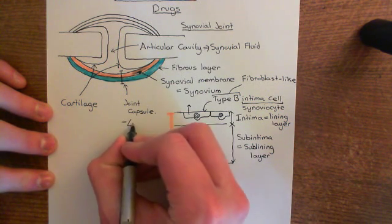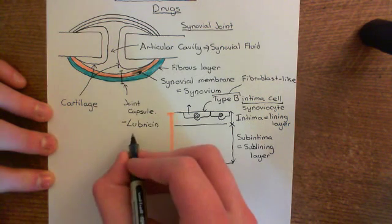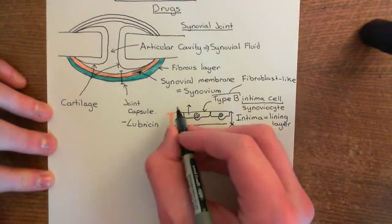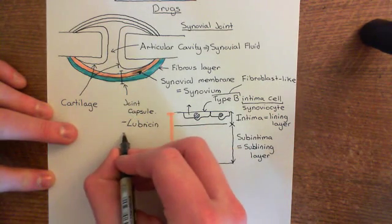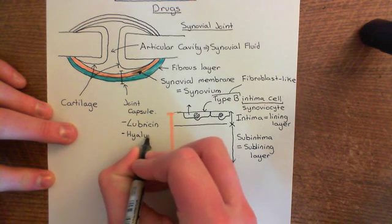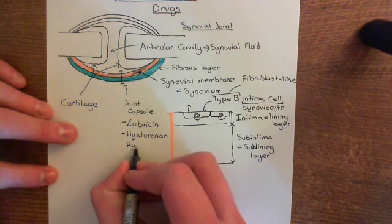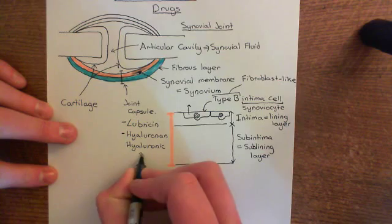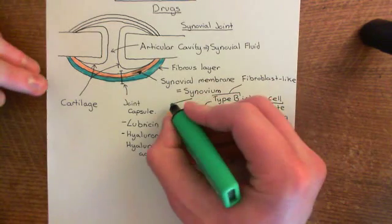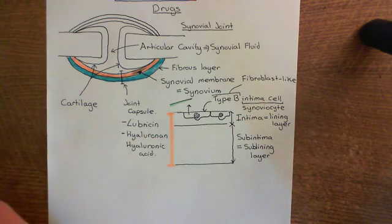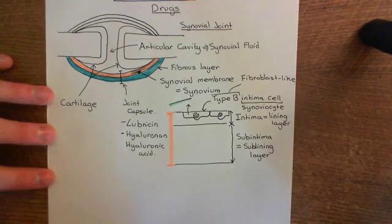Two of the molecules they secrete are lubricin — a polysaccharide which is secreted by these cells and helps lubricate the joint surface. They also secrete hyaluronic acid, or hyaluronan, as it's often called — they're the same thing. Hyaluronic acid is a great big polysaccharide; these are massive molecules which are loads and loads of sugars bound together. Lubricin and hyaluronic acid are secreted by these type B intima cells and are important components of the synovial fluid.